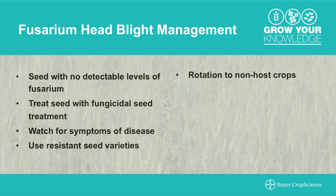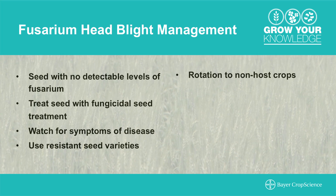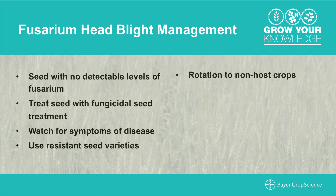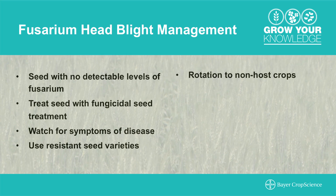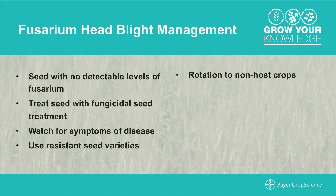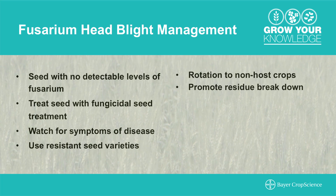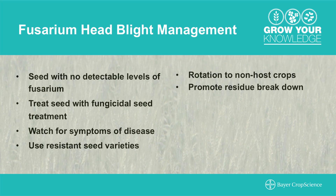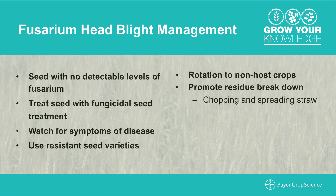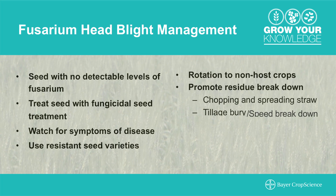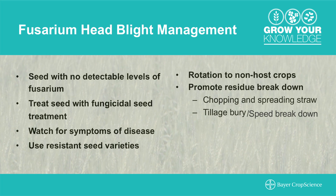In addition, rotation from cereal crops to non-host crops is key to minimize inoculum — generally two years away from small cereal grains — and try to avoid corn in the rotation. Any strategies you can take to promote residue breakdown are key as well: effectively chopping and spreading straw, looking at tillage to bury and speed the breakdown of that residue.